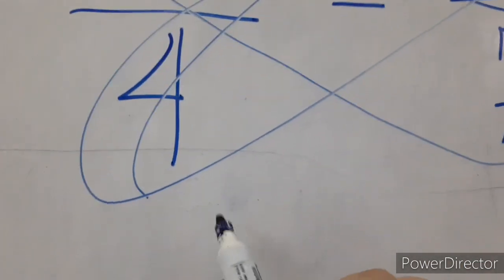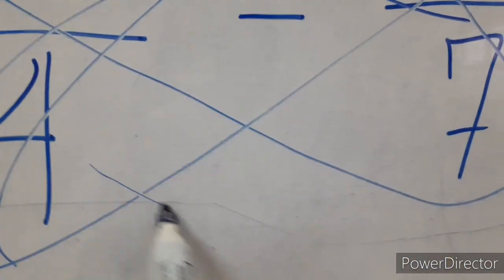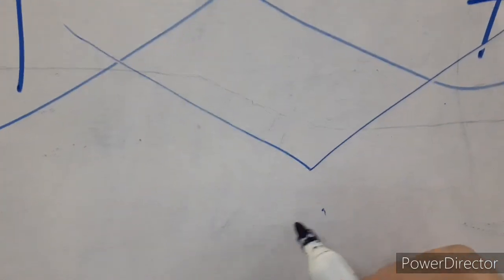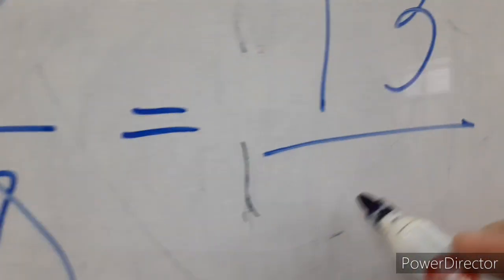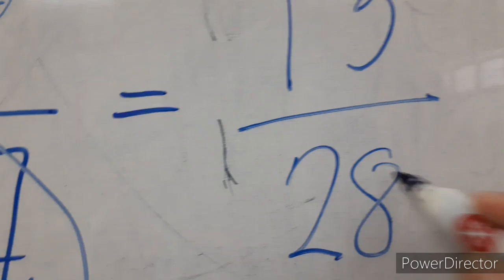And our denominator, we simply multiply the denominators. 4 times 7 is 28. So the answer is 13 over 28.